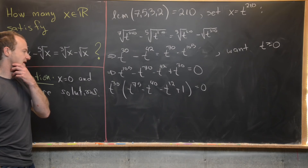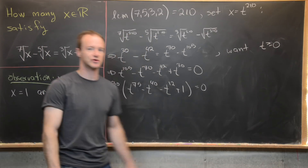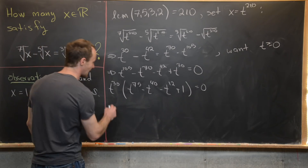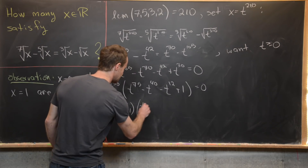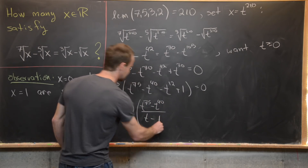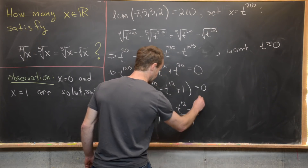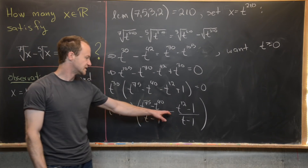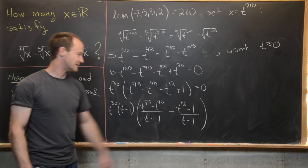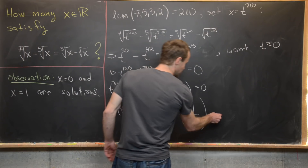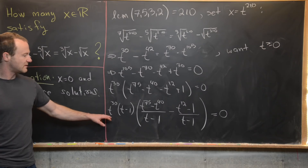We also want to factor out the root corresponding to t equals 1. We can do this in the following way: write t^30 times (t minus 1) times the quantity (t^75 minus t^40) all over (t minus 1), then minus (t^12 minus 1) all over (t minus 1). The minus sign distributes to give a plus one in the numerator, and multiplying through by (t minus 1) cancels the denominators, leaving a factor without t equals 1 as a root — unless it's a multiple root.